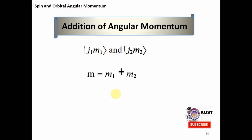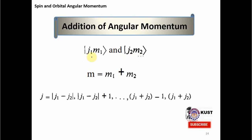However, we cannot simply add J1 and J2 arithmetically. If J1 and J2 are parallel we can add them; if anti-parallel we subtract them. But if they have some angle between them, there will be a range of allowed values. The allowed values for the total J range from |J1 − J2| up to J1 + J2 in integer steps. The total angular momentum could be any of these allowed values depending on the relative orientation of J1 and J2.